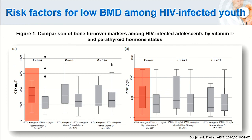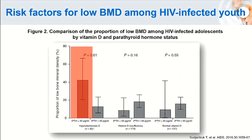This figure shows the same findings: CTX bone resorption markers and P1NP bone formation markers were greatest among adolescents with both vitamin D deficiency and secondary hyperparathyroidism, and the proportion with low bone mineral density was significantly higher among those with both conditions.